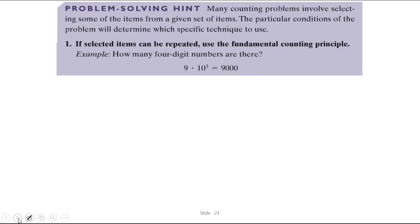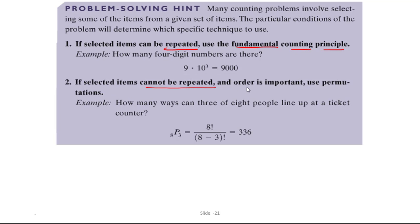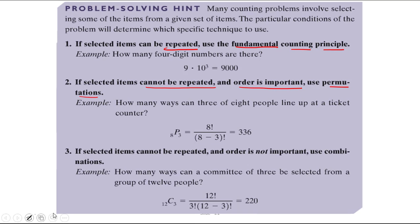Here's another problem solving hint. Many counting problems involve selecting some of the items from a given set of items. The particular conditions of the problem determine which specific technique to use. For example, if the selected items have repetition you have no choice but to use the fundamental counting principle. If the selected items cannot be repeated and order is important then you're going to use permutations. If the selected items cannot be repeated and order is not important then you're going to use combinations.